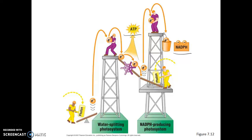This concludes our discussion of the light reactions. There will be an overview video of the light reactions next. After that, we'll discuss the Calvin Cycle and see how it uses the chemical energy made by the light reactions to convert it into glucose. Thanks for your attention, and I'll see you in the next video.